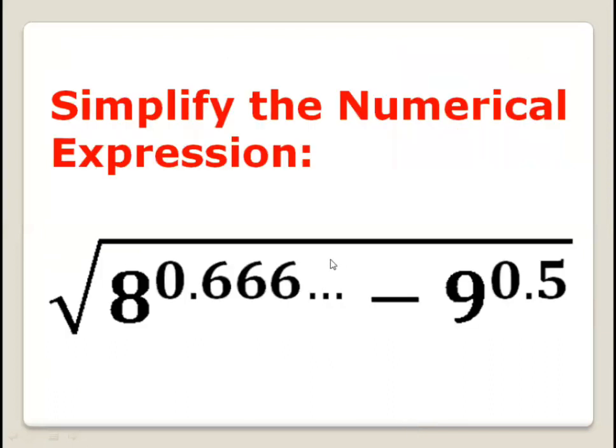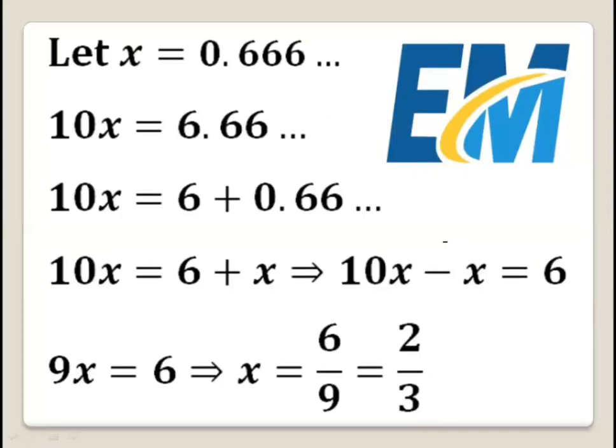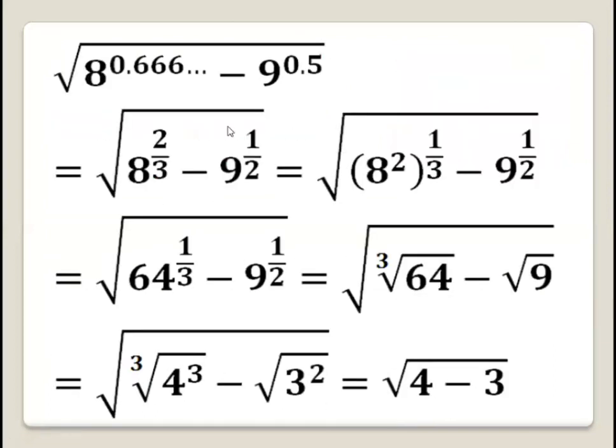So instead of 0.666 repeating, we can write 2 over 3. Then our numerical expression becomes square root of 8 to the power 2 over 3, minus 9 to the power 0.5, which is 9 to the power half.